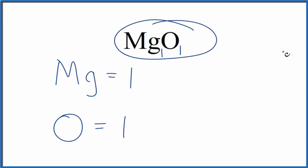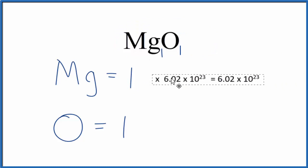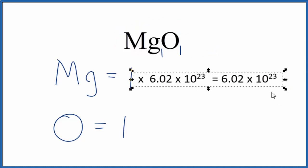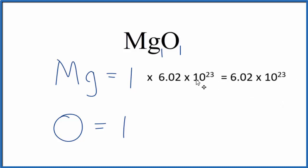In that case, what you do is you take the number of magnesium atoms, the one, and you multiply that by Avogadro's number. So we take 1 times 6.02 times 10 to the 23rd, and if we had one mole of MgO, we'd have Avogadro's number of atoms.